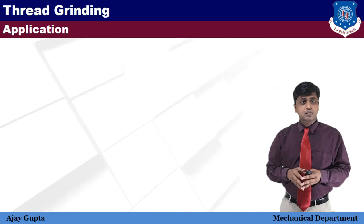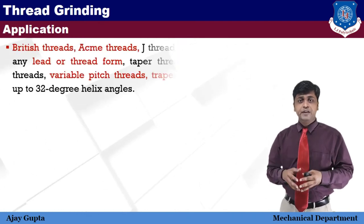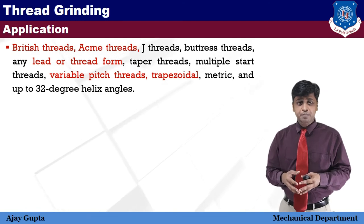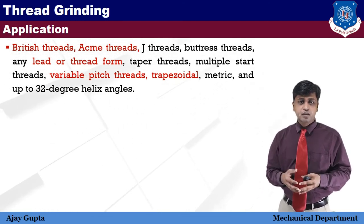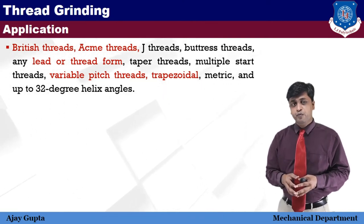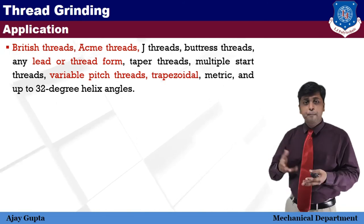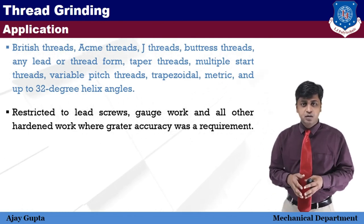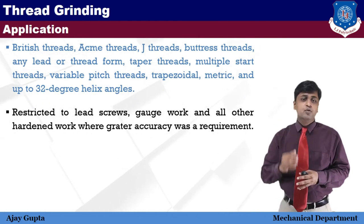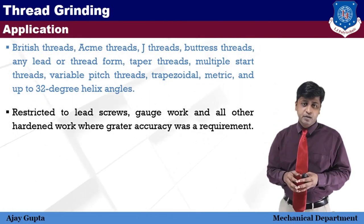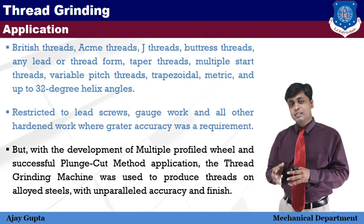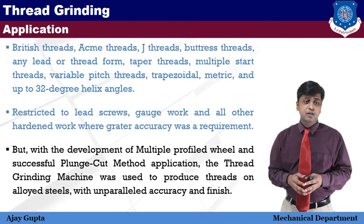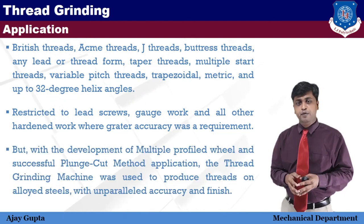The thread grinding process is used to create a variety of thread components. Options include British thread, ECME thread, J threads, Buttress thread, any lead or lead form, thread forms, taper threads, multiple start threads, variable pitch threads, trapezoidal, metric, and up to 32-degree helix angle threads. Thread grinding was originally restricted to lead screws, gauge work, and other hardened work where great accuracy was required. But with the development of multiple profile wheels and the successful plunge cut method, thread grinding machines are now used to produce threads on alloyed steel with unparalleled accuracy and finish.